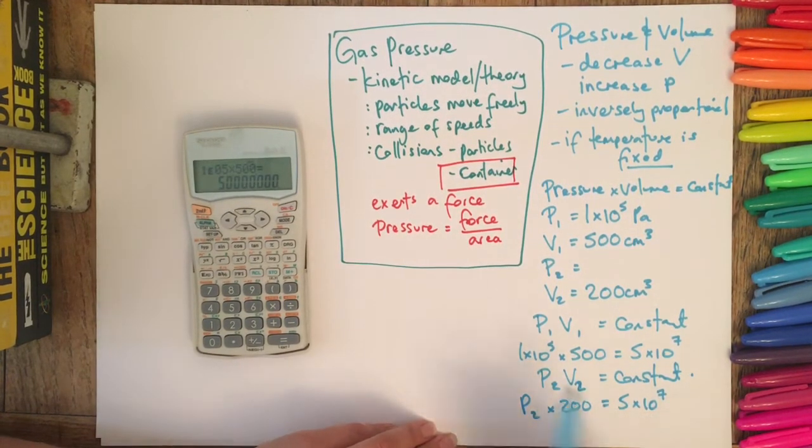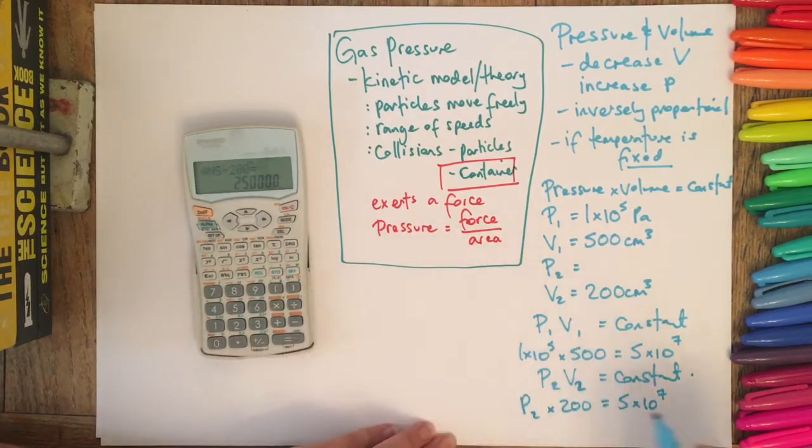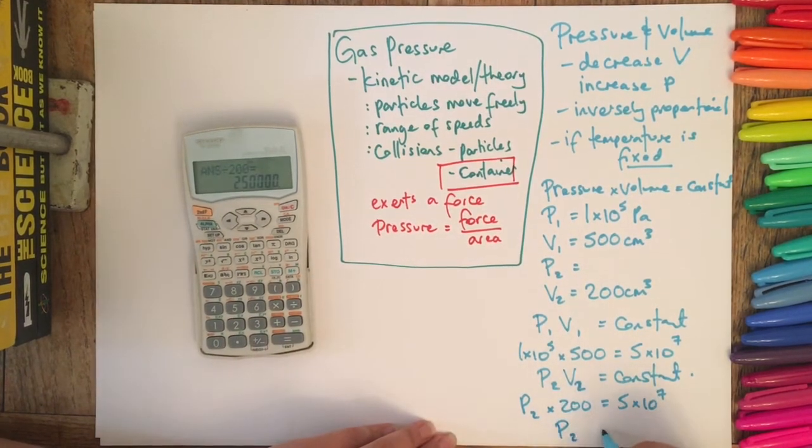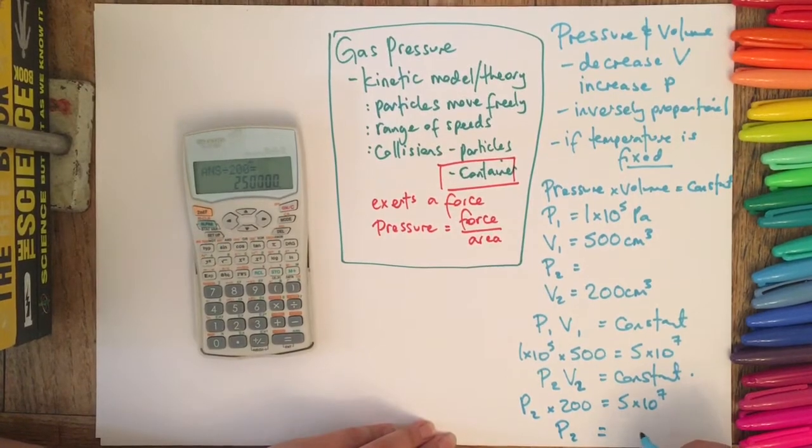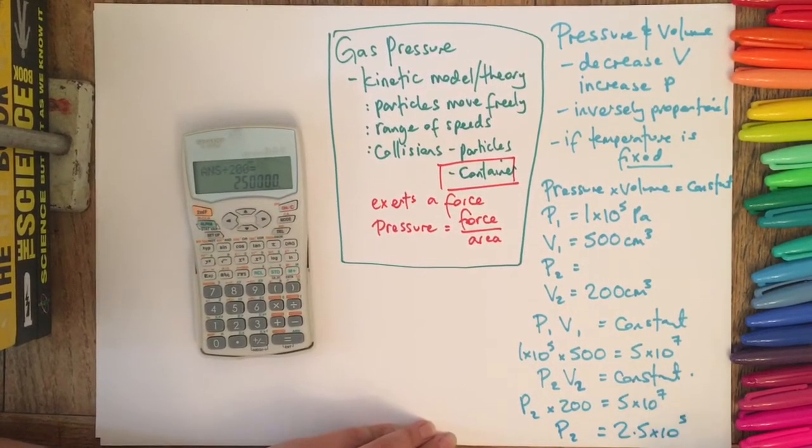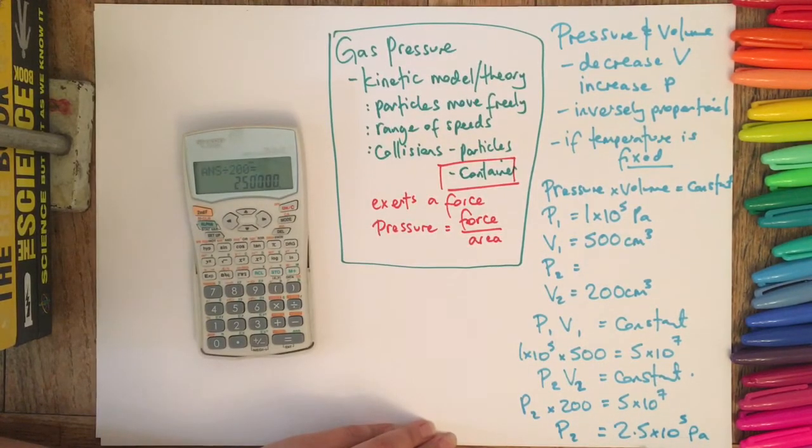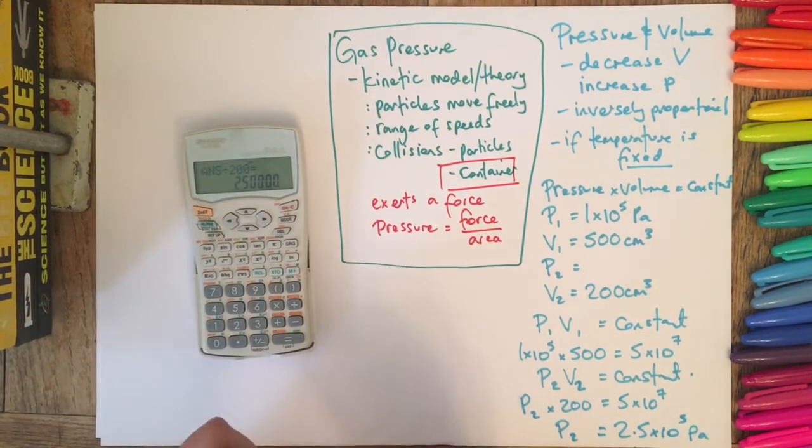So rearrange it, so it'll be 5 times 10 to the 7 divided by 200. So we can do this here, and so then we can work out that P2 is going to be 2.5 times 10 to the 5 pascals. So we can see straight away we expected our pressure to be higher and it was higher, so that's how we work it out.